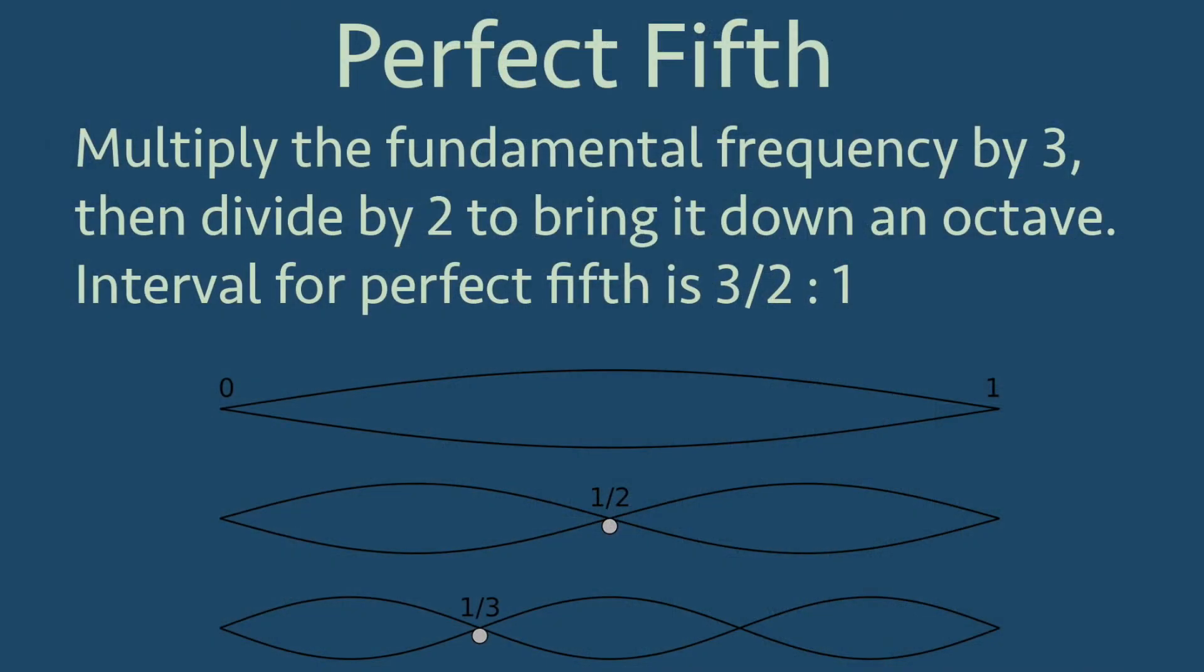This new note has a frequency three times the fundamental, and I will divide that by two to move it down an octave. This means the new note has a frequency 3 over 2, or 1.5 times the frequency of the fundamental, and so the ratio between the fundamental and this new pitch is 3 halves to 1. We call this new note a perfect 5th.